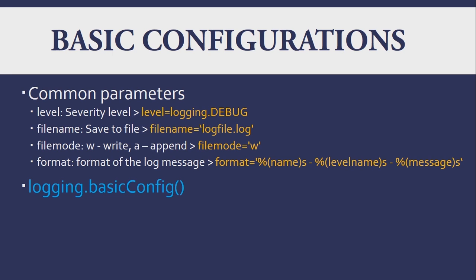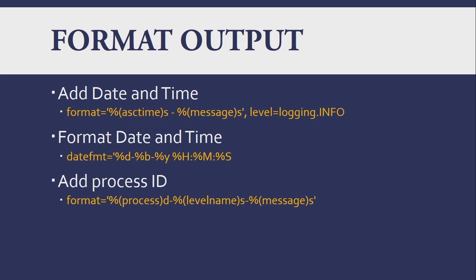We can change the default level if we want. Here are some common parameters to configure logging using the logging.basicConfig() method: the 'level' parameter sets the severity level; 'filename' indicates where to save logs instead of the console; 'filemode' indicates whether to write a new file or append to an existing log; 'format' formats the output string with logger name, level, and message. We can also add date and time or a process ID.